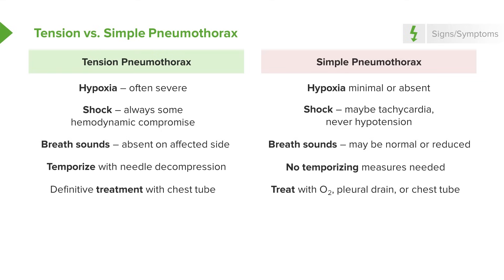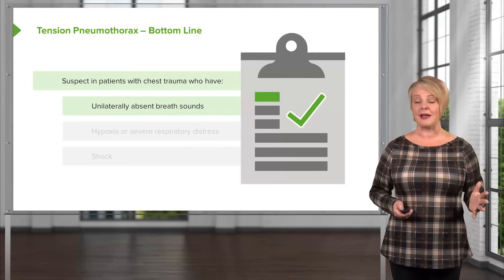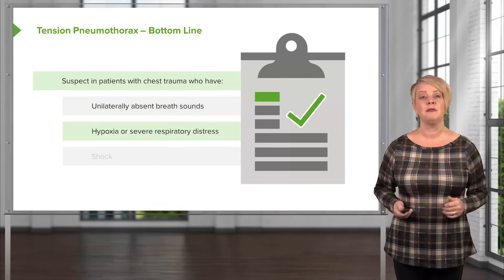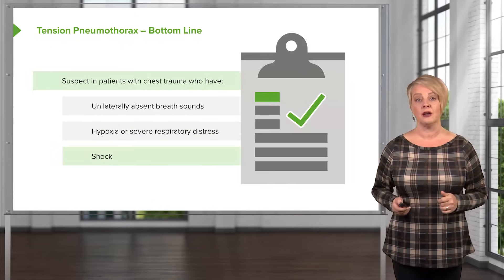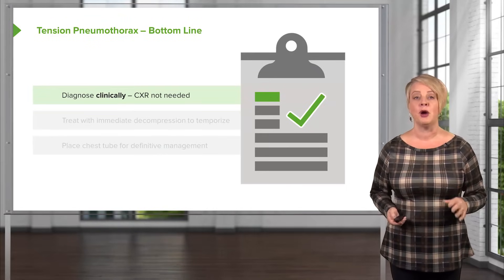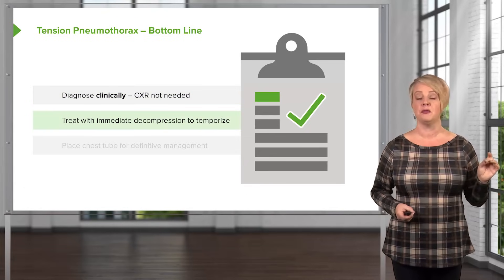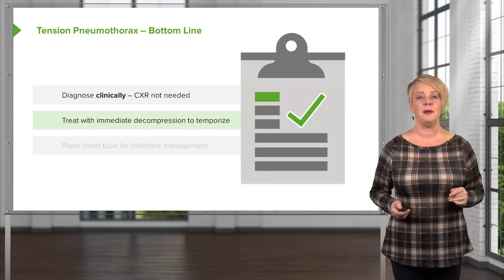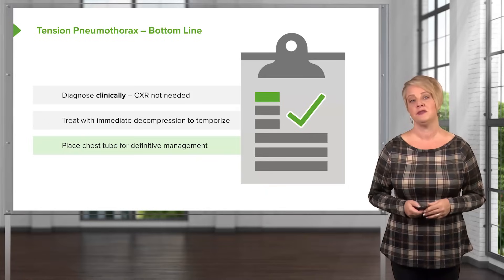With tension pneumo, you will always go for a chest tube. The bottom line: always suspect tension pneumothorax in chest trauma patients with unilaterally absent breath sounds, severe hypoxia or respiratory distress, or shock. Diagnose clinically, perform needle decompression to temporize, and then place a chest tube as definitive management.